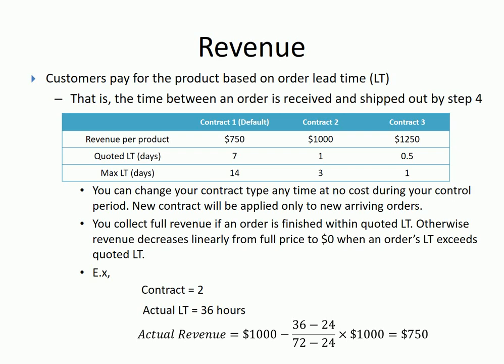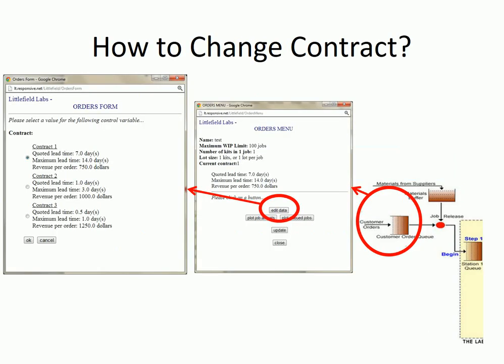You can change your contract type anytime at no cost during your control period. The new contract will be applied only to newly arriving orders. During the simulation, if you want to change the contract type, click on the customer order queue. It will bring up a menu with an edit data button — click that button to see the menu where you choose your contract type.